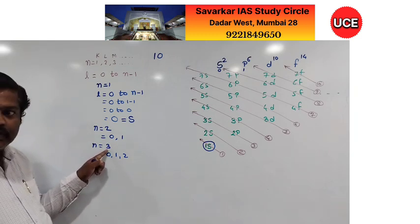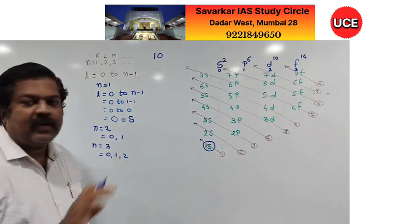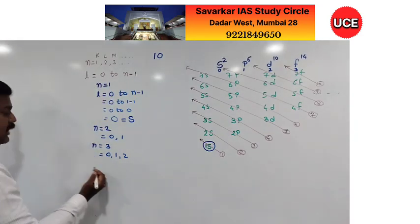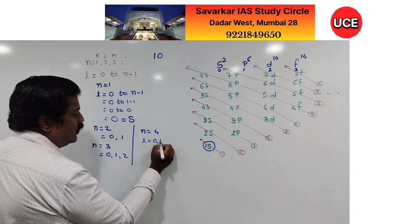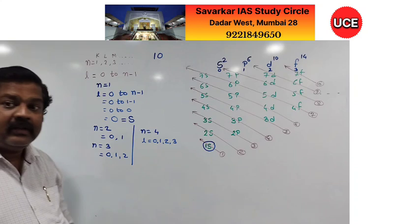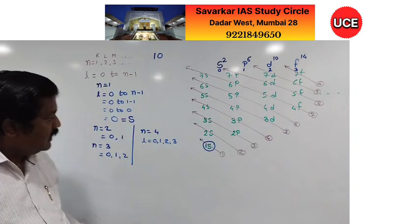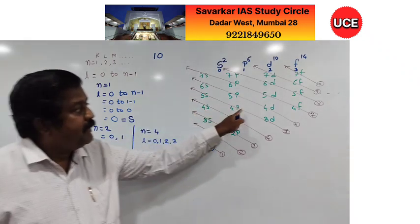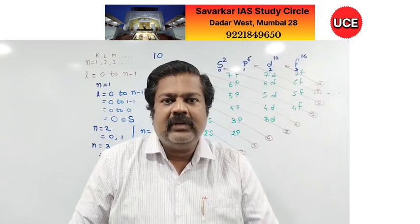For n = 4, l values are 0, 1, 2, 3, giving orbitals S, P, D, and F — all four are available. For n = 2, only 2 orbitals; for n = 3, three orbitals (F is absent); for n = 4, all four. This is the azimuthal quantum number.